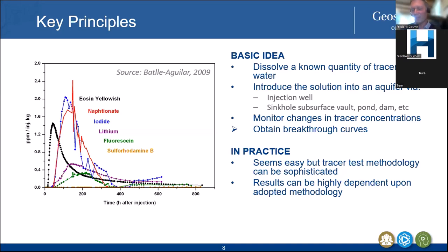Sometimes it seems too easy, and I think part of the reason some tracer techniques lost interest in Australia as early as the 1970s and 80s was essentially the notion that it was too easy — you chuck a tracer somewhere, hope for the best, the tracer disappears, and you don't necessarily achieve what you want. You want to actually prove your hypothesis and verify something.